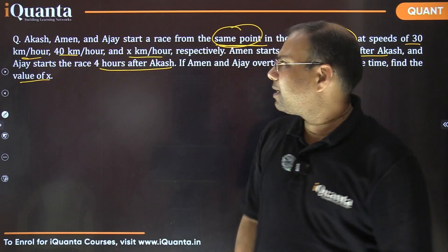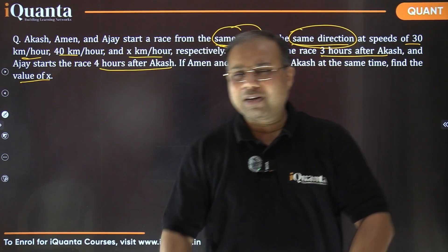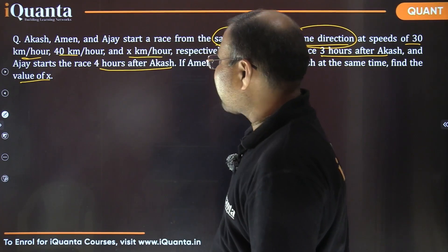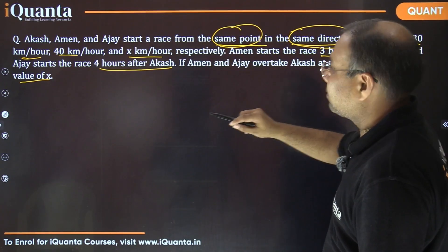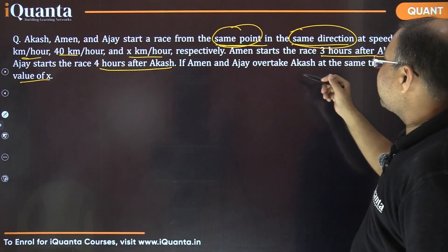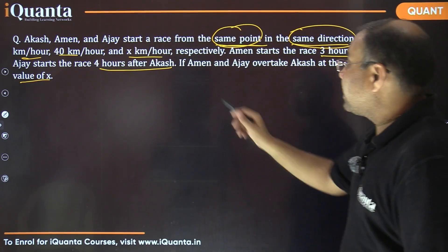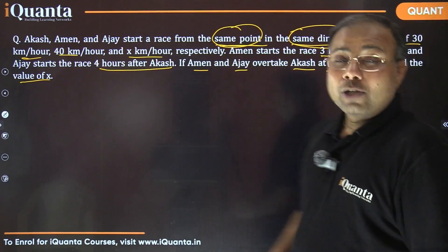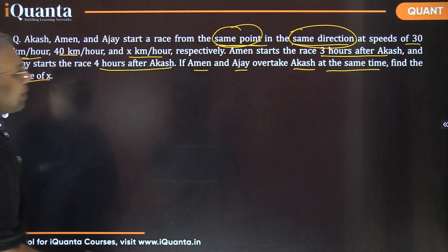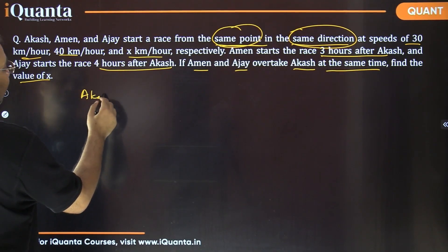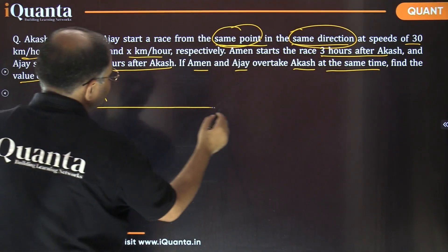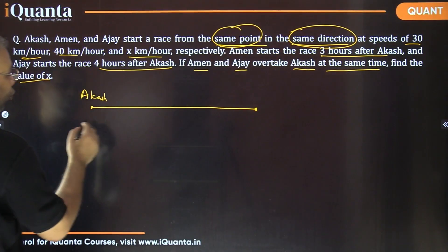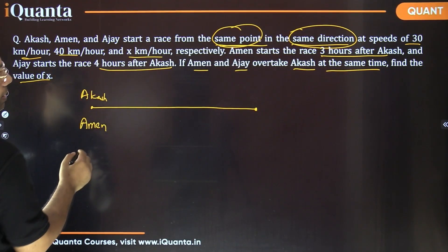Akash is taking the longest amount of time. In time-speed-distance problems, it is always best to draw the situation, so let's draw it for all three persons separately. They are starting from the same point, moving in the same direction with different speeds and different starting times. Akash has started already and has reached somewhere, and both Aman and Ajay started afterwards.